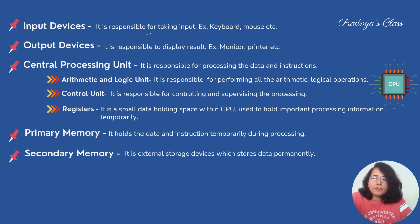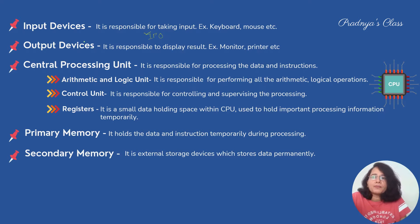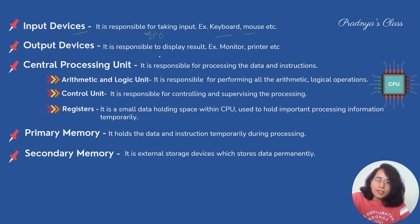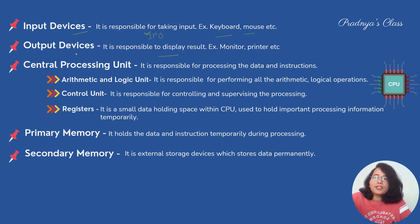First is the input device. As the computer works on the principle of IPO, we need to give input to the computer, so input devices are used. Some of the commonly used input devices are keyboard, mouse, etc. After processing, we need to display the result on the monitor or printer — for that we use output devices.